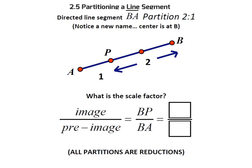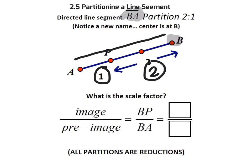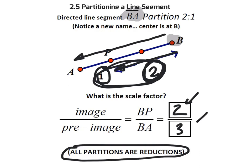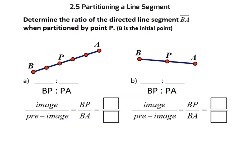Let's do another. Notice here something new: this is directed line segment BA, which means B is the center now. This is a partitioning ratio of 2 to 1 — the 2 comes first from the B end, then the 1. What would that be as a scale factor? The total amount of parts is 3, that's our original. We scaled P to be here, so this would be 2 thirds. All partitions will always be reductions because you're cutting the segment back.